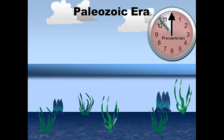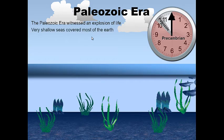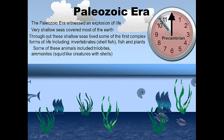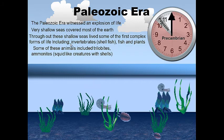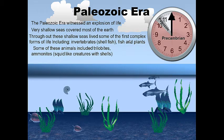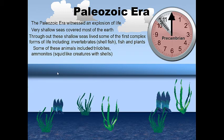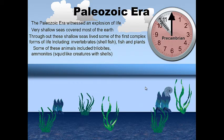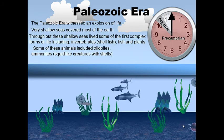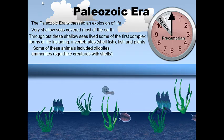The Paleozoic Era. Notice this little slice on the timeline. The Paleozoic Era witnessed an explosion of life, with water covering our Earth in very shallow oceans, or seas. Throughout these seas lived some of the first complex forms of life — invertebrates like shellfish, ammonites, fish, and plants. Some animals like trilobites — like little roly-poly bugs — and other squid-like creatures that lived inside shells, were also present. This explosion of life marked the beginning of the Paleozoic Era.